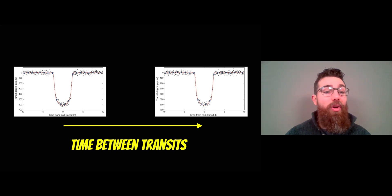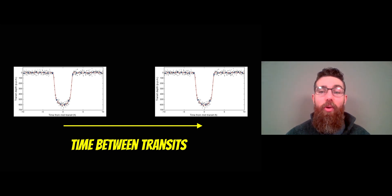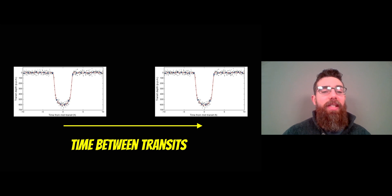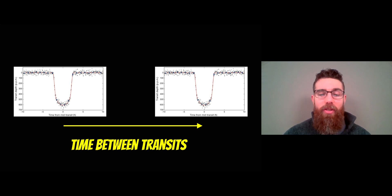Now if you've only got the one transit it becomes a bit more complicated, and there are other methods to get the orbital period. But most of the time, if we've got multiple transits, we can get the orbital period fairly easily.